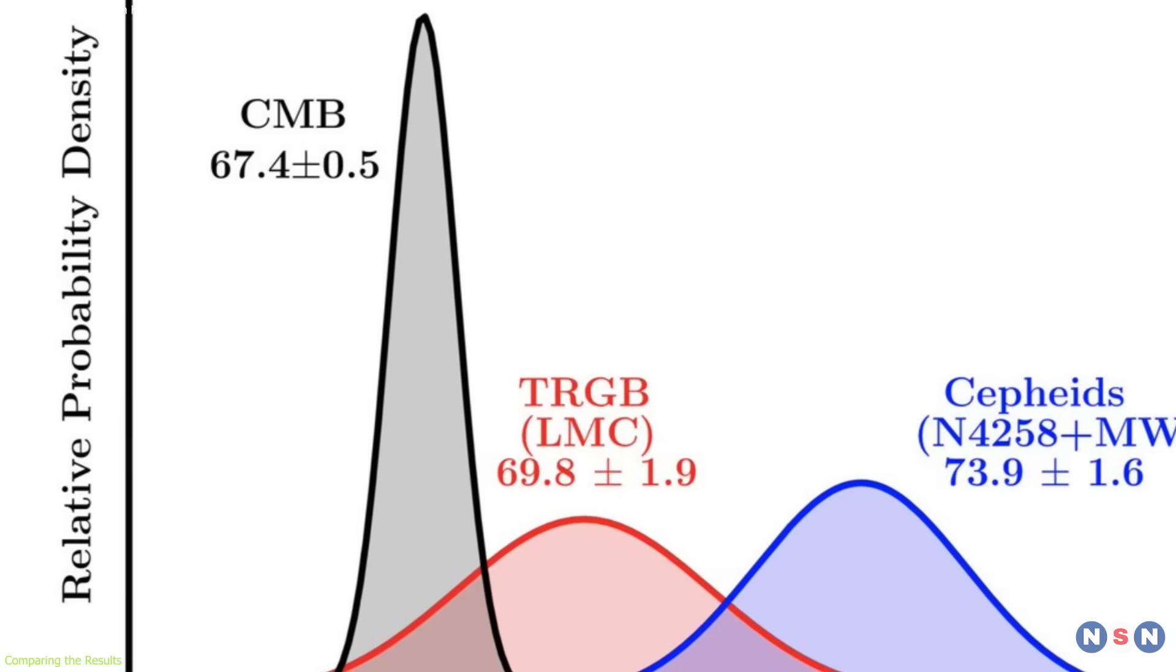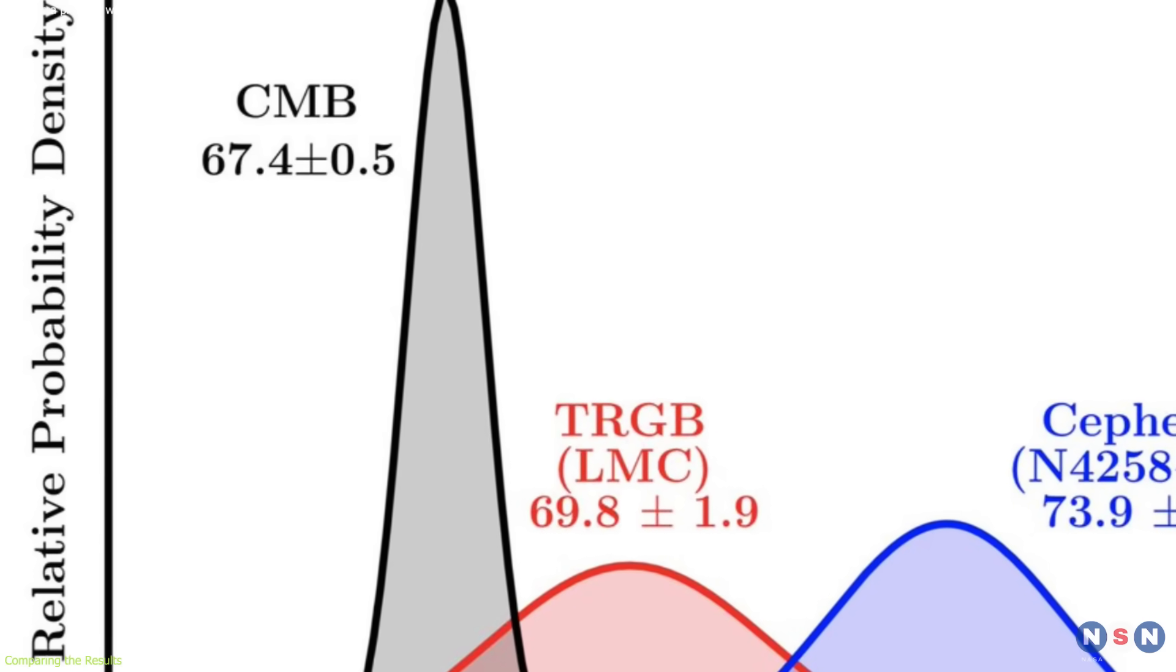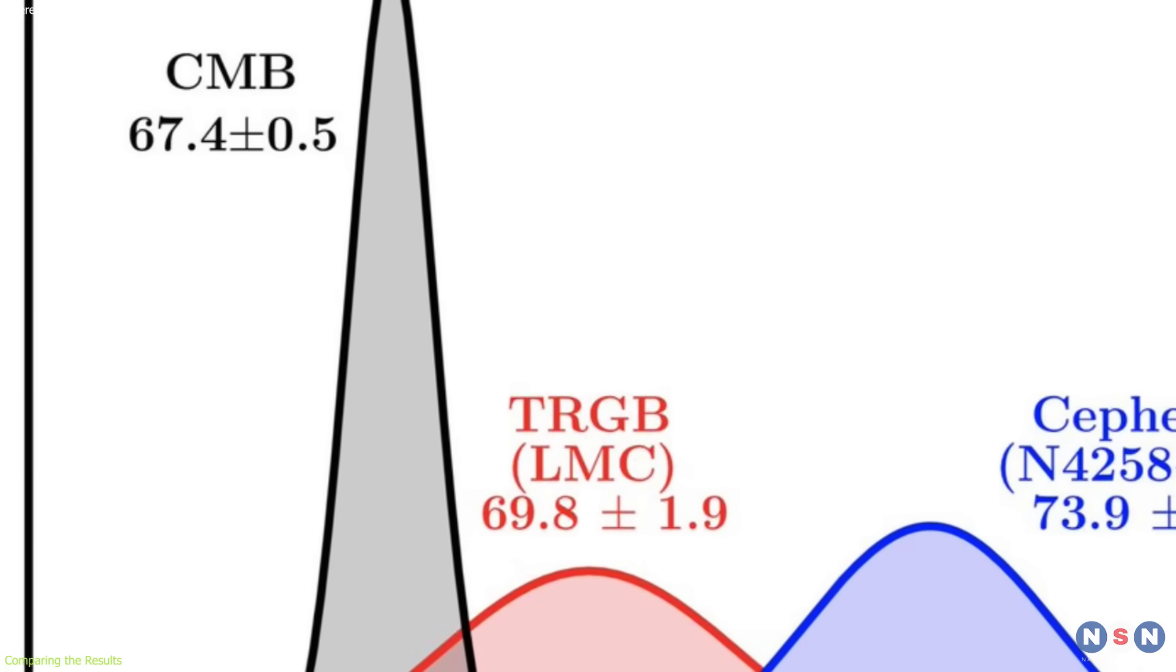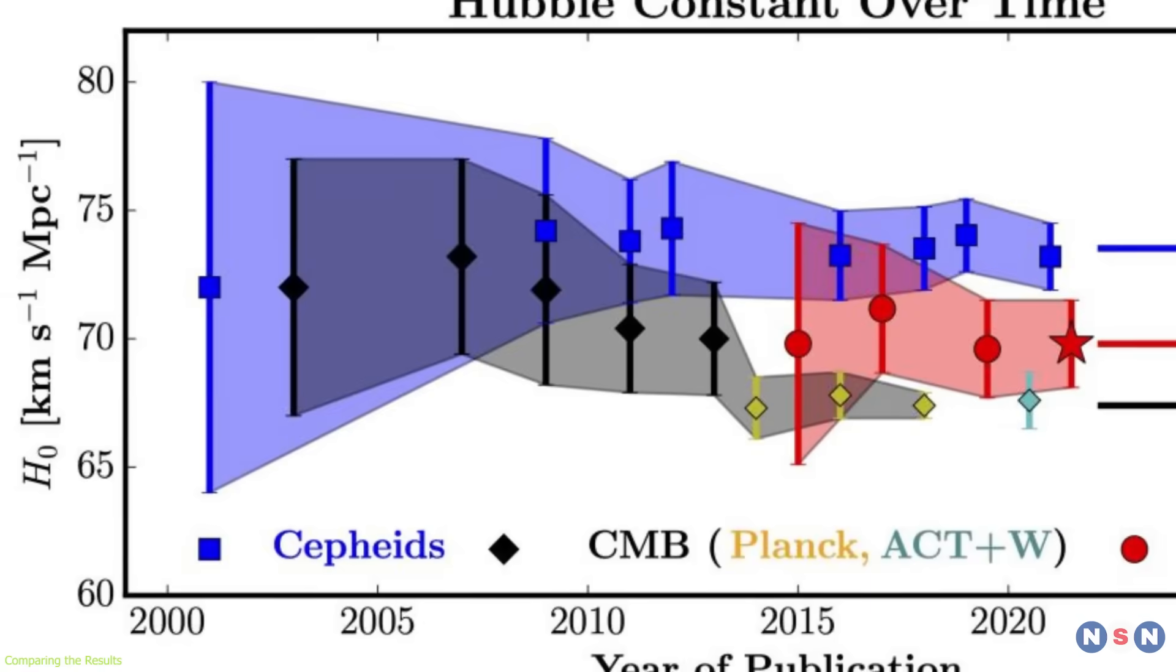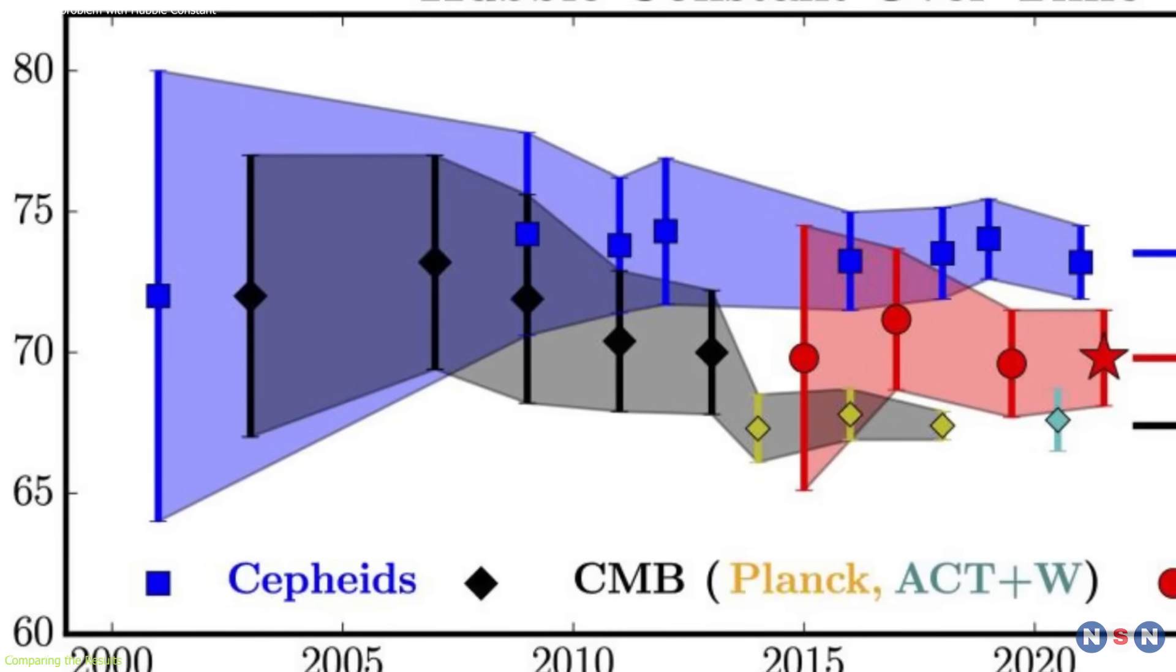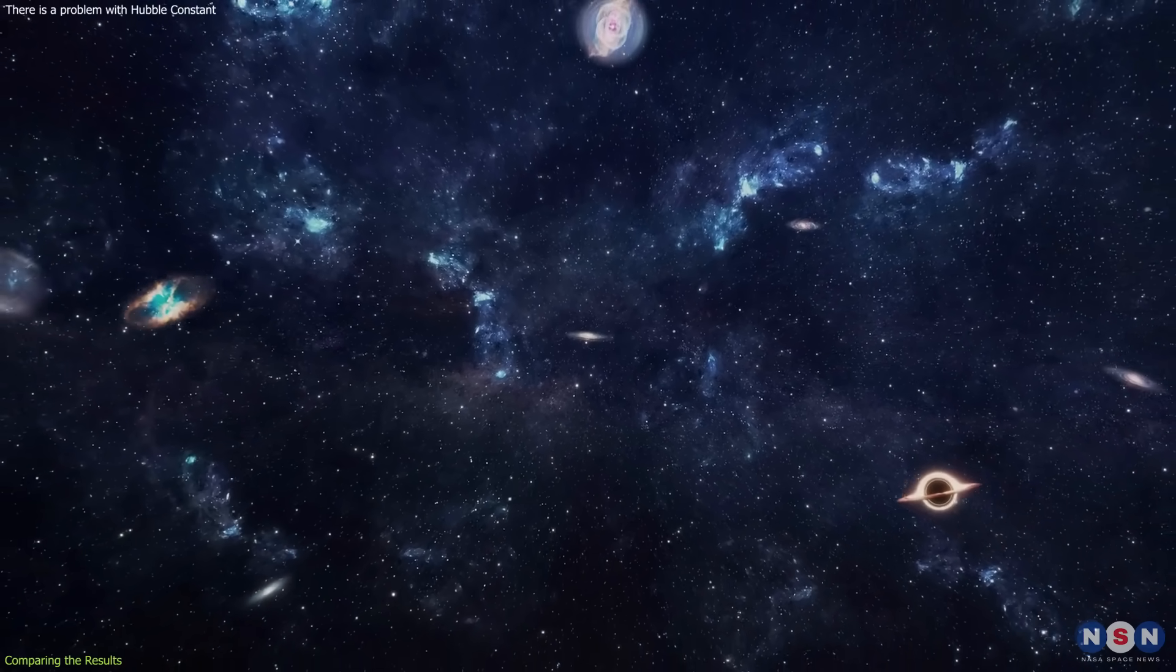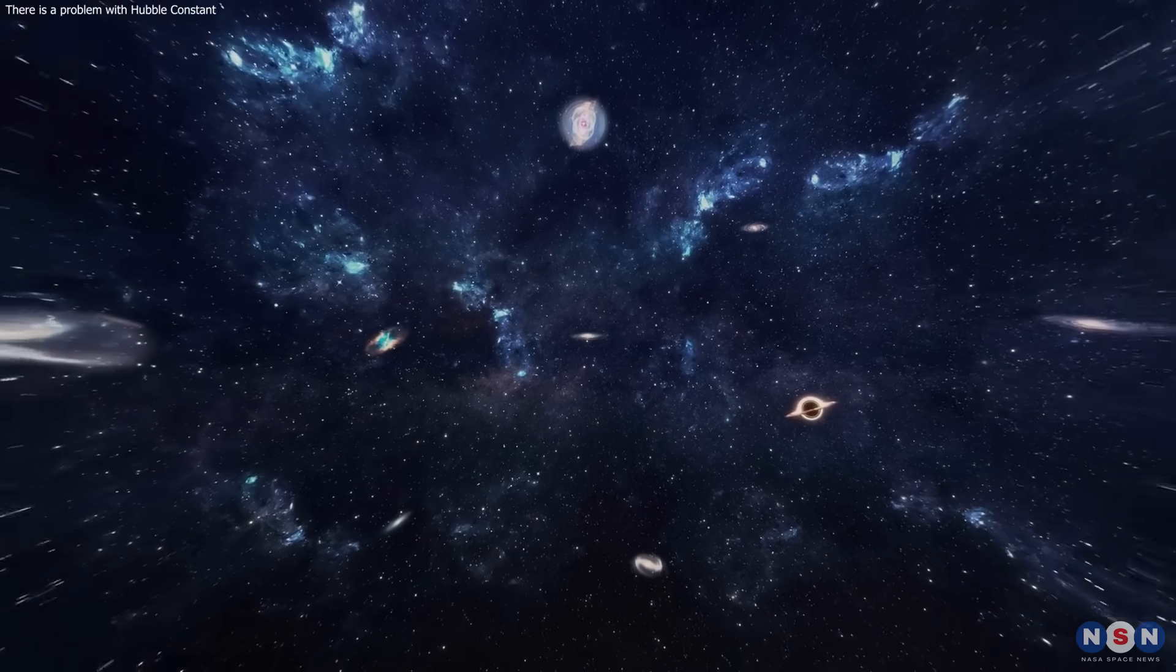The two values do not match. The value predicted by the Planck satellite is about 67.4 kilometers per second per megaparsec, which is about 8% lower than the value measured by the SH0ES team. This difference is not a small error, but a significant discrepancy that cannot be explained by the uncertainties in the measurements. This discrepancy suggests that there is something missing or wrong with our understanding of the universe, and that we may need some new physics to resolve it.